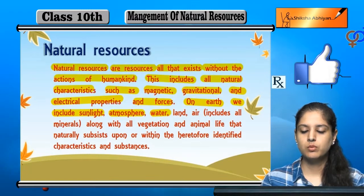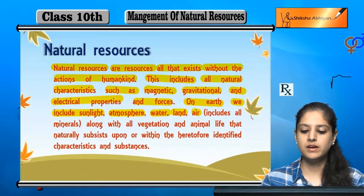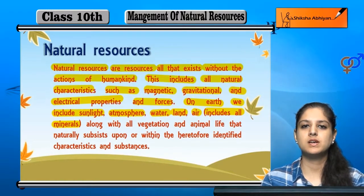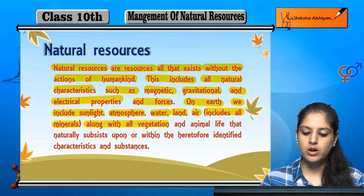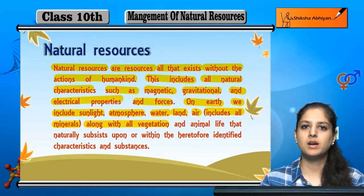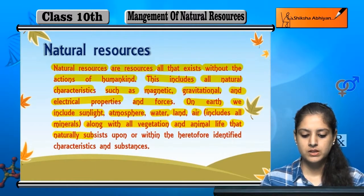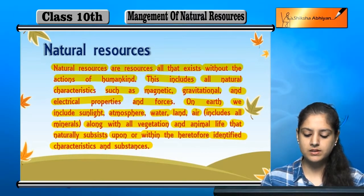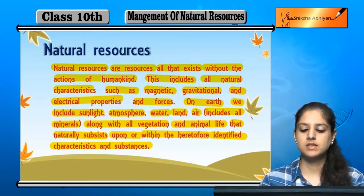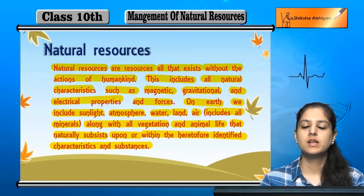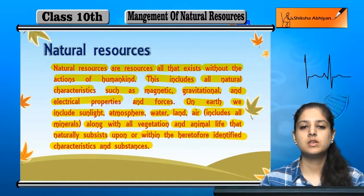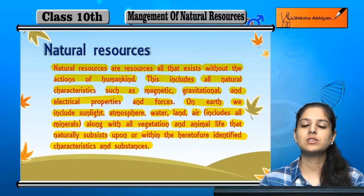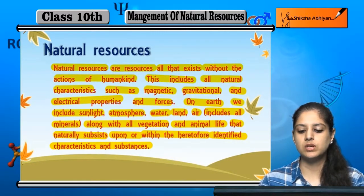Earth pe sunlight, atmosphere, water, land, air — aur in sab mein sare minerals bhi included hote hain, jitne bhi minerals earth crust mein available hain. Aur sari vegetation, matlab plant life, and animal life that naturally subsist upon or within the identified characteristics and substance — yeh sab cheez hain jo sunlight, water, land, air, animals, even human beings aur vegetation plants — yeh sab naturally created hain aur naturally exist ho rahe hain.